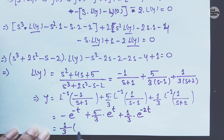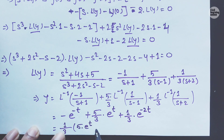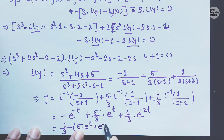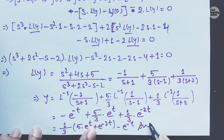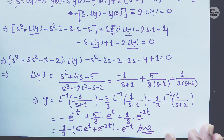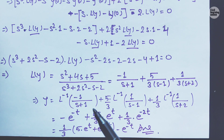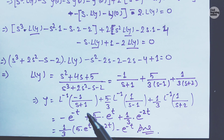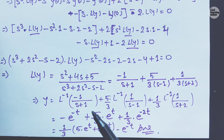Taking 1/3 common, we can rewrite the final answer as: y = (1/3)[5e^t + e^(−2t)] − e^(−t). I hope you enjoyed this lecture. See you in the next video with a new example on the application of inverse Laplace transformation for differential equations. If you haven't subscribed, please subscribe. Stay safe and take care of yourself.